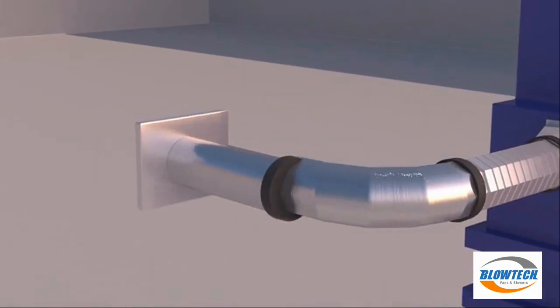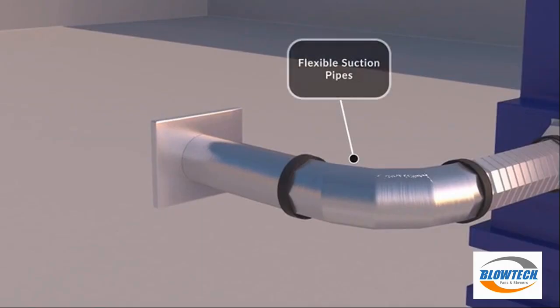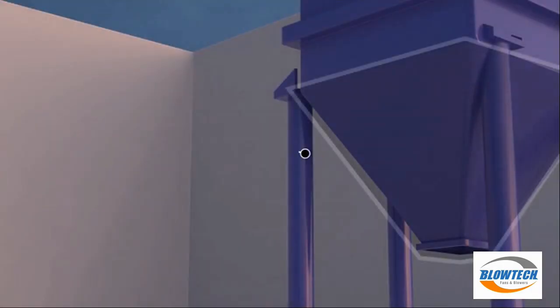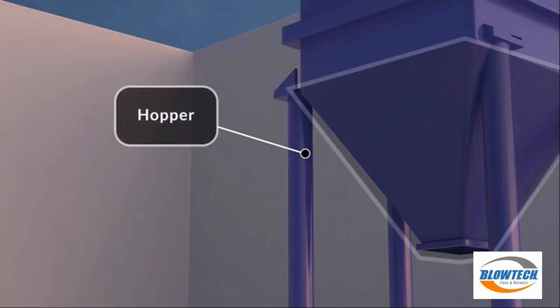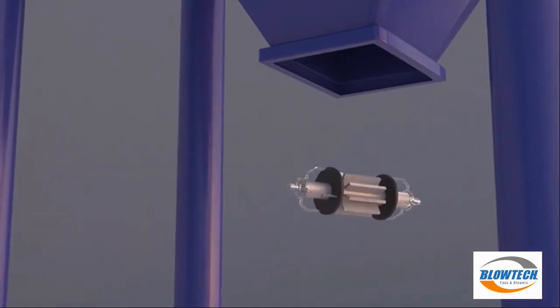These suction pipes carry the dirty air from the source. At the bottom is a hopper which is fitted with a rotary air lock system.